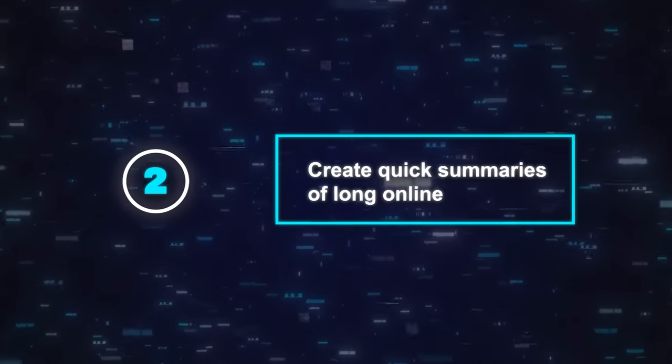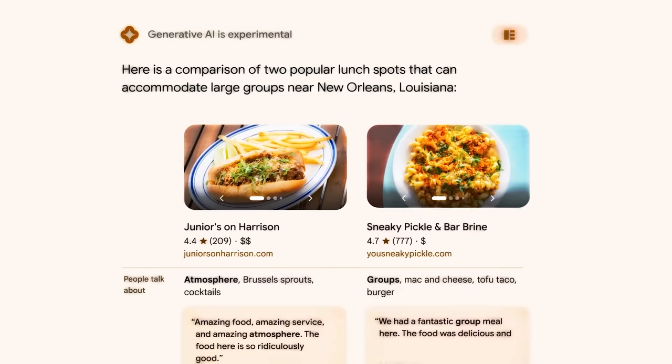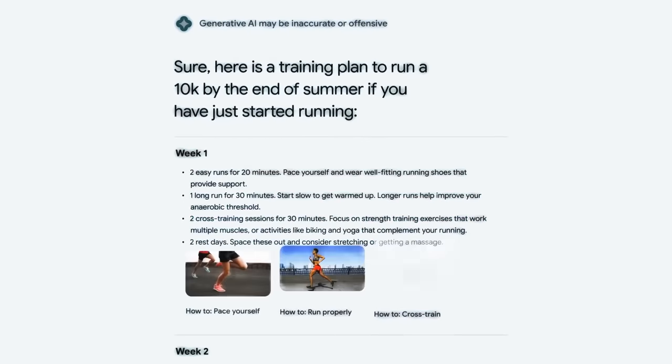SGE can also create quick summaries of long online articles. Instead of reading the entire thing, you can hit a button and get a brief summary in seconds. Plus, you can choose how detailed you want that summary to be.